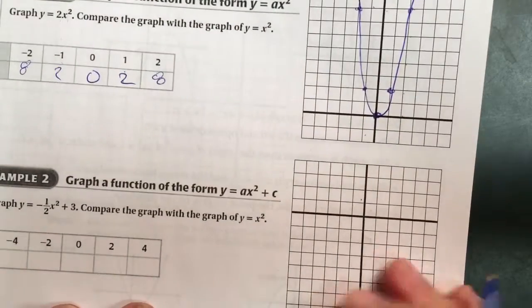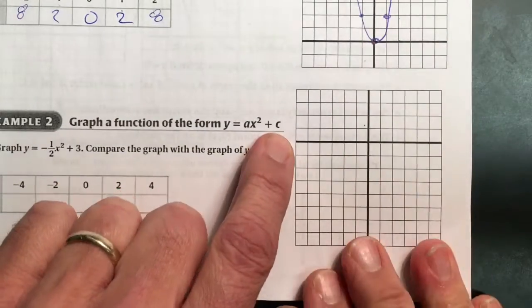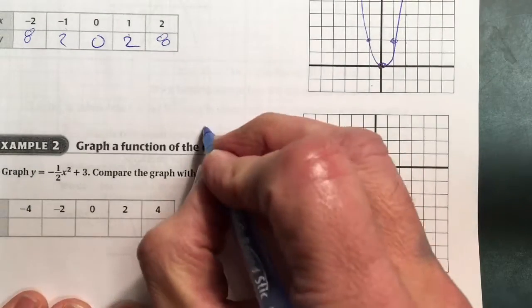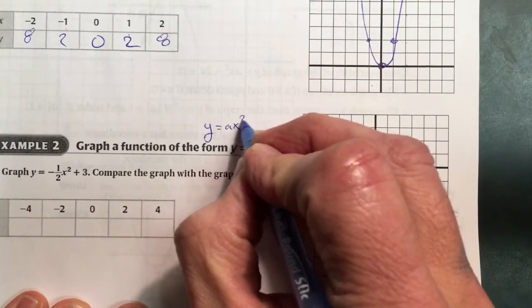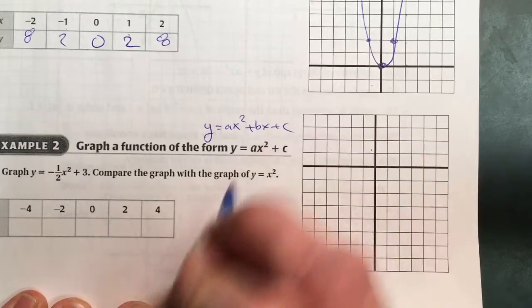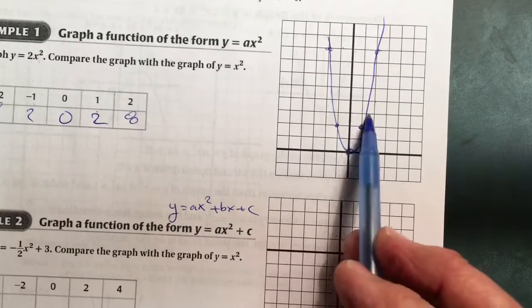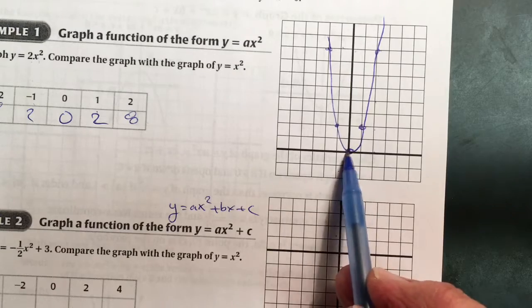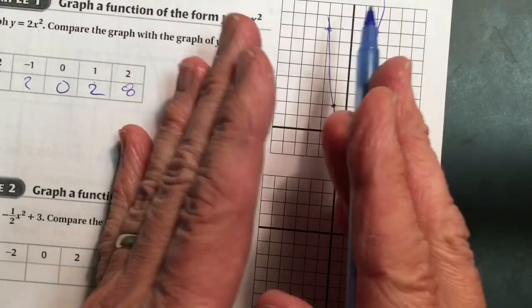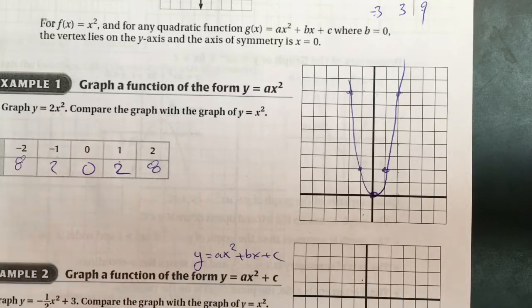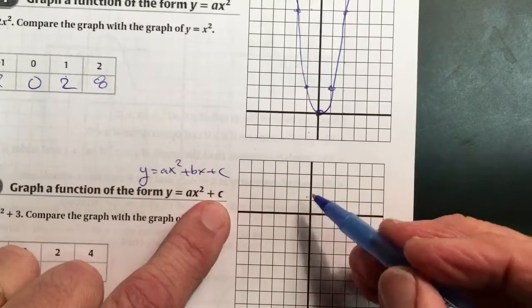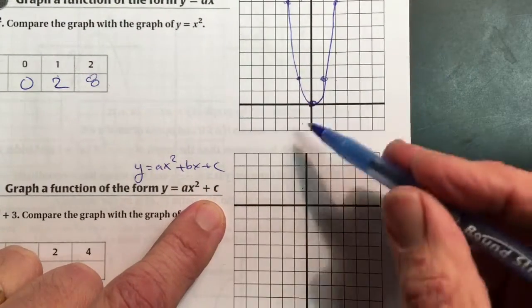Next example, we're going to throw at us now the c from the standard form. Again, the standard form is y equals ax squared plus bx plus c. The x squared is just going to change the shape of our parabola vertex at the origin. The c is going to move the vertex up and down the y-axis.